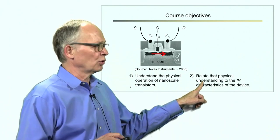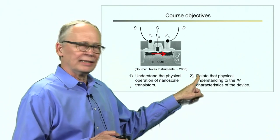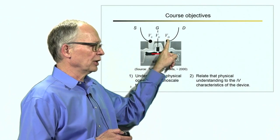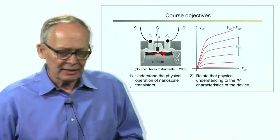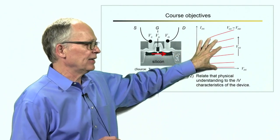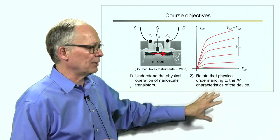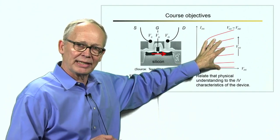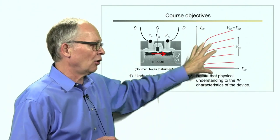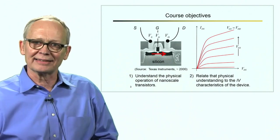The second objective of this course is to relate what goes on inside to the voltages we apply to the terminals and to the currents that flow through those leads. To understand why the IV characteristics have this particular shape, what makes a particular characteristic useful from an application perspective, and to relate all of that back to what goes on inside the transistor.